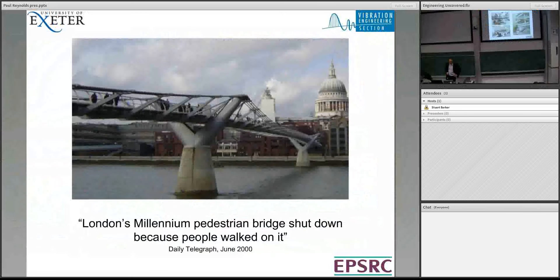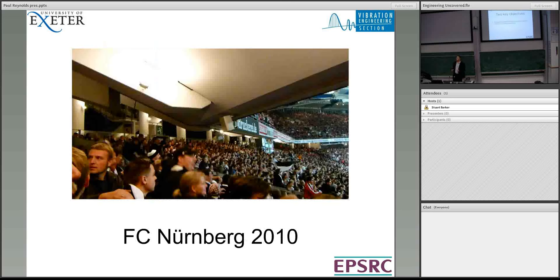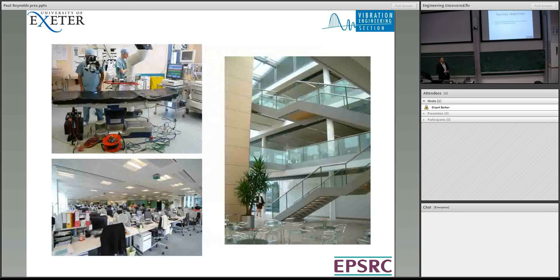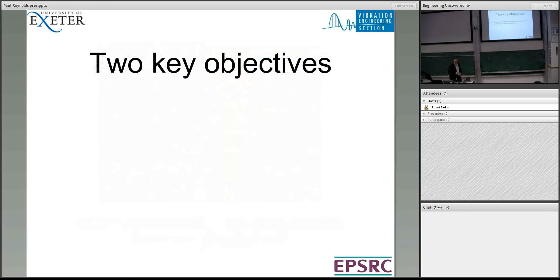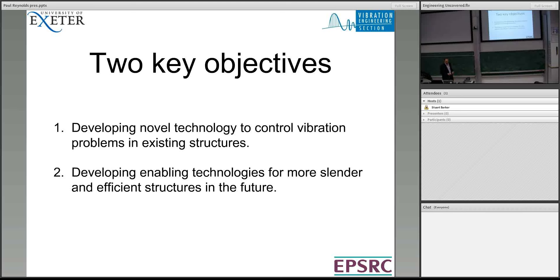These are vibration issues that are commonly around, and my work has two key objectives. The first is to develop new ways to control vibrations in a reasonably cost-effective and efficient manner. But looking more to the future, we want to develop enabling technologies to enable more slender, more efficient structures. Most civil structures today — their slenderness is governed by vibration rather than by deflections or strength. So if we want to push slenderness and make more efficient use of materials, we really need to be looking at vibration control technologies.